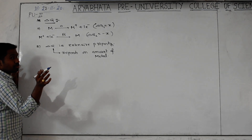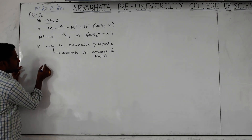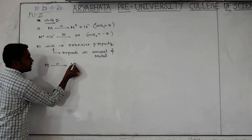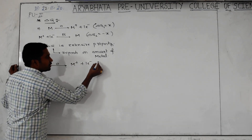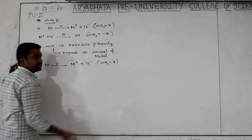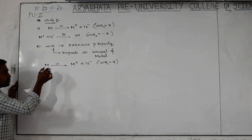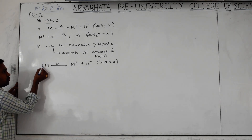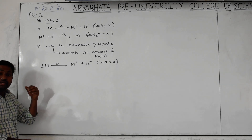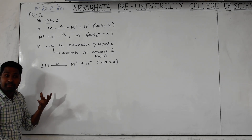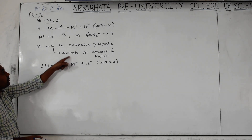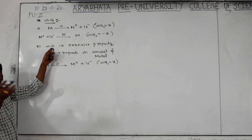For example, M is there undergoing oxidation, becoming M plus plus one electron. For this, delta G1 value is equal to some X. In this oxidation, we are considering one mole of the metal particle. Now, what I am doing is taking N number of metal particles — means the quantity of the metal will be changing. Definitely, delta G will be also changing.